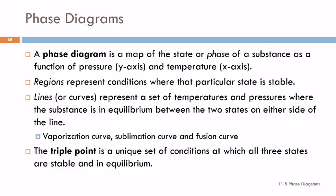There are different regions in the phase diagram. These represent areas, or conditions, where that state is stable.